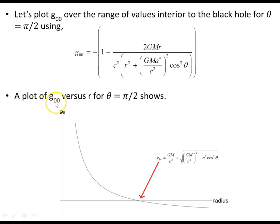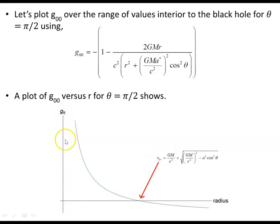A plot of G00, the time component of the metric, versus R for theta equal to pi/2 shows a general form for all Kerr black holes, where a crossover point occurs when G00 equals zero — that gives the outer stationary limit surface. The inner stationary limit surface occurs at R equals zero. Past the outer crossover point, G-t-t is negative, and within the black hole it remains negative right up to R equals zero, the ring singularity.